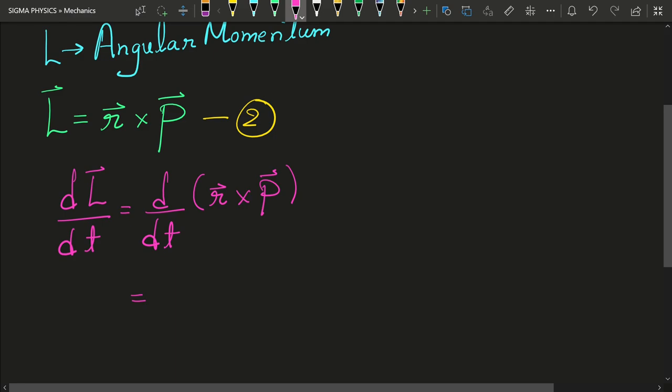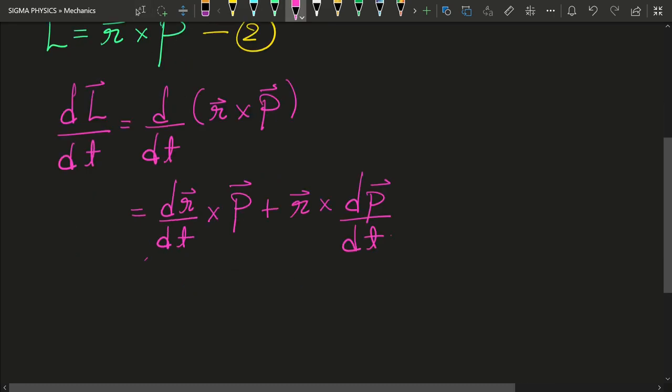So using product rule, we will get dr upon dt cross p plus r cross dp upon dt.